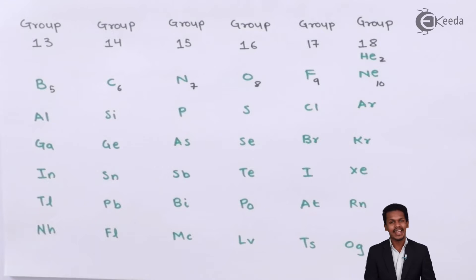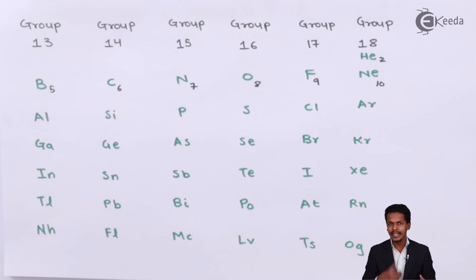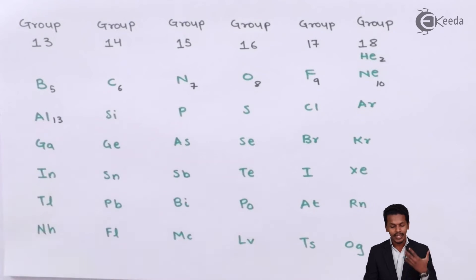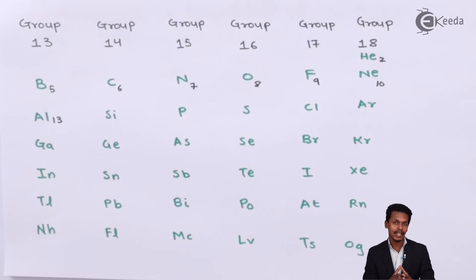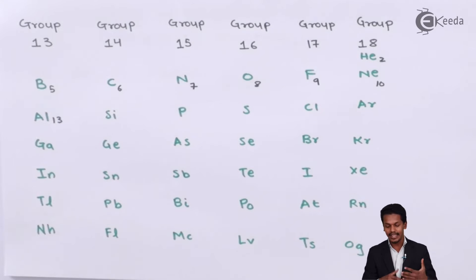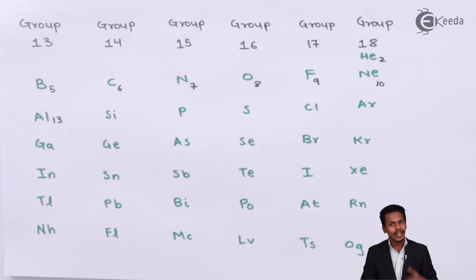If we move from top to bottom along a group, the atomic number increases rapidly. For example, for Boron it is 5, but for Aluminium it is 13, and for Gallium it is 31. So there is an increase in atomic number, which means the number of shells also increases, and thereby the atomic size also increases. In a regular manner, Boron will have a smaller size compared to Aluminium, and Gallium will have a larger size, with Thallium having the maximum atomic size.